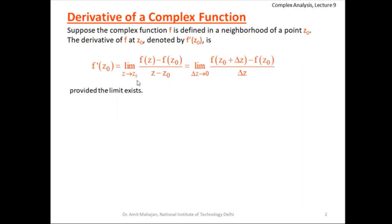We can write it as f'(z₀). If we substitute z minus z₀ as Δz, then this definition can also be written with Δz in the denominator. Since z minus z₀ is Δz, the limit becomes Δz tends to 0, and z in the numerator is substituted as z₀ plus Δz. So these two forms are equivalent and we can use either to find whether this limit exists or not.